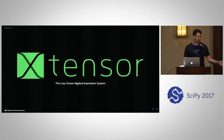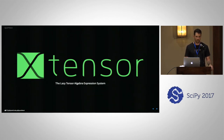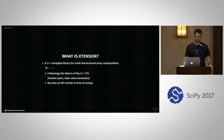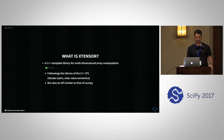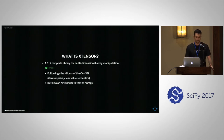Today I'm glad to announce xtensor, which is the project we've been working on for a few months and which I think solves at least part of this problem. Before anything, xtensor is a C++ template library for multi-dimensional array manipulation. We follow the idioms of the C++ standard library: iterator pairs, clear value semantics.